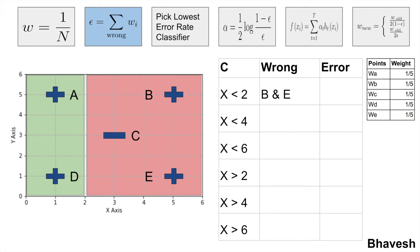Let's consider the decision tree with a split at x<2. Any point less than 2 is considered positive; any point greater than 2 is considered negative. Looking closely, samples b and e are misclassified — they were actually positive but are incorrectly classified as negative. I have a column called 'wrong' which denotes the misclassified samples, which in this case are b and e. Adding both their weights: wb = 1/5 and we = 1/5, giving a total error rate of 2/5.